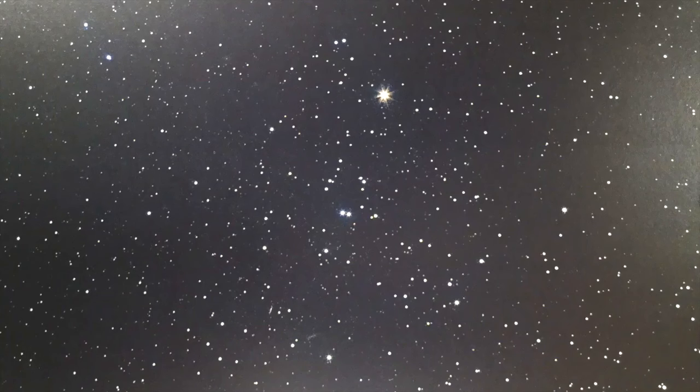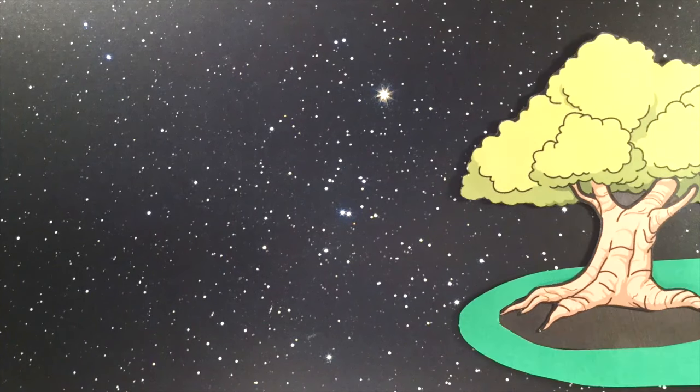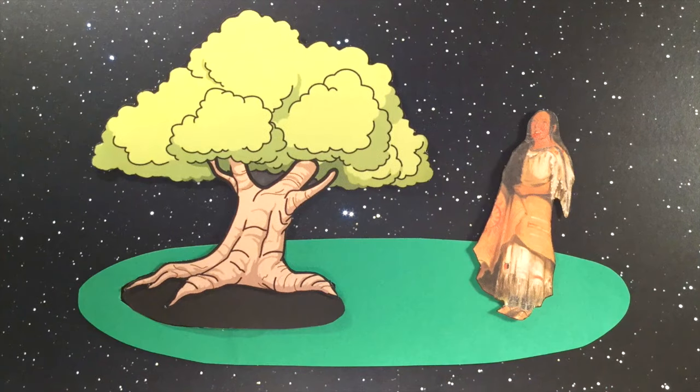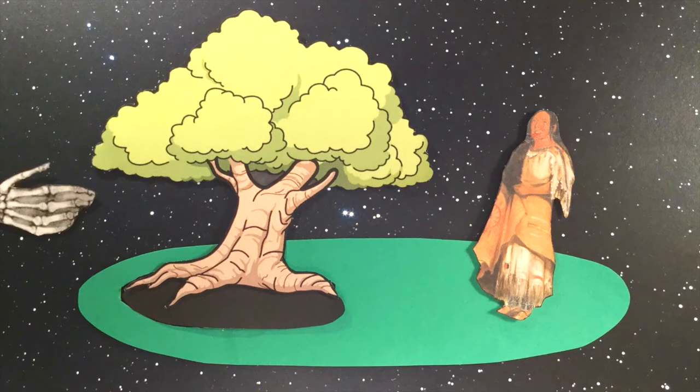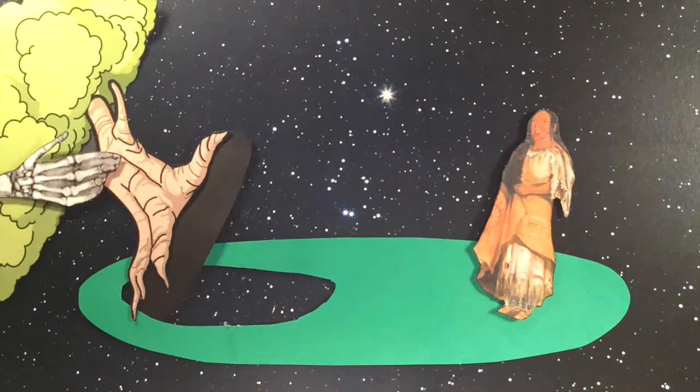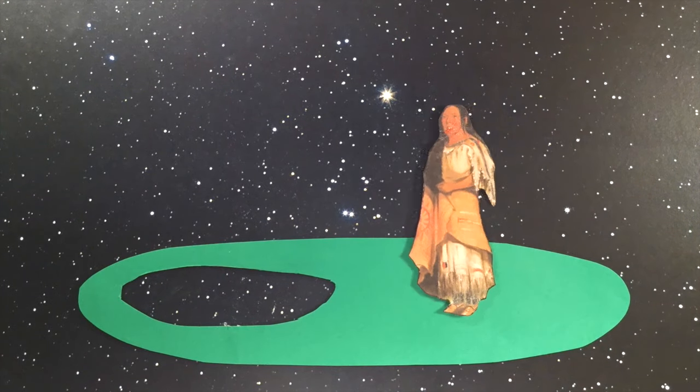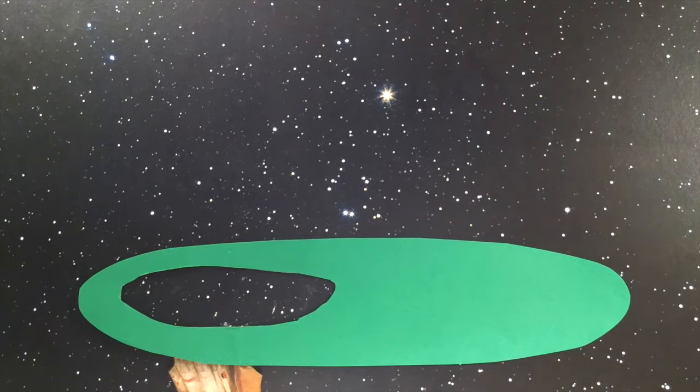Long before the world was created, there was an island in the sky inhabited by sky people. One day, a pregnant Sky Woman dropped through a hole created by an uprooted tree and began to fall for what seemed like eternity.